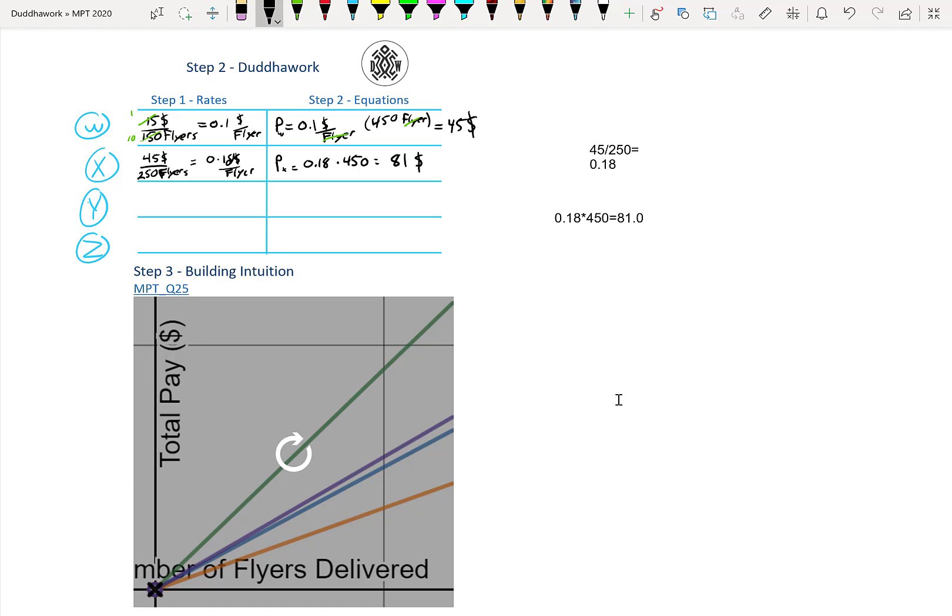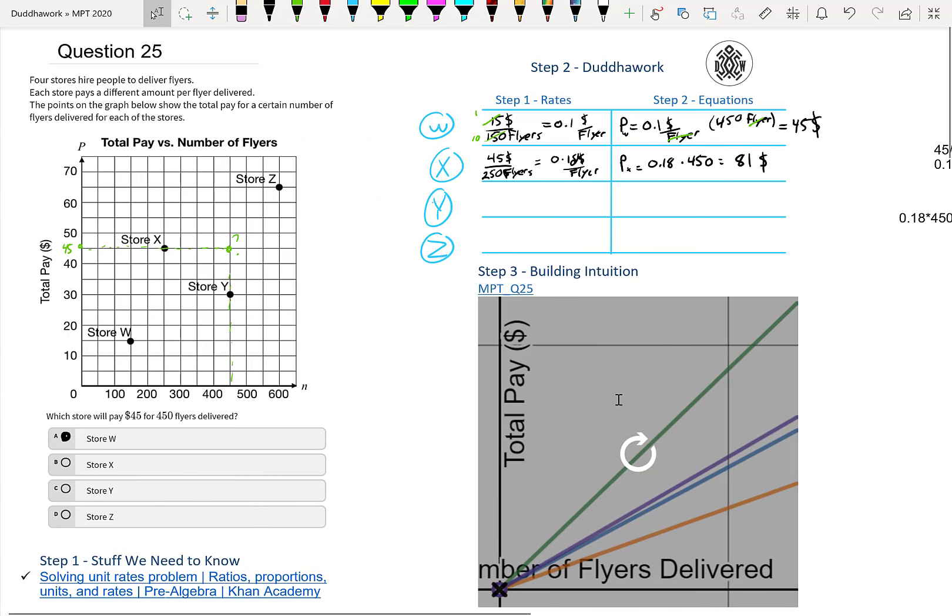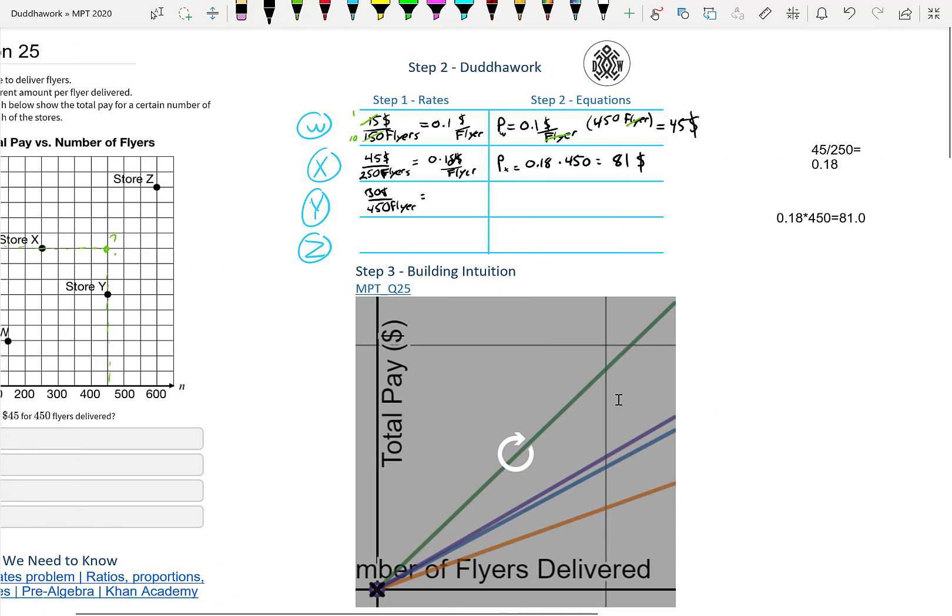So you'd actually get paid more here for the store X. And then similarly for Y, you'd get paid $30 per 450 flyers. So again, they put that to trick you because it's 450 flyers, but you don't make $45. You make $30. So then when you divide those two numbers, it's 30 divided by 450, which is this funky number. So it's $0.06 repeating dollars per flyer. So then you only get paid around $0.07 here. It's not too good. It's the lowest paying store right now.